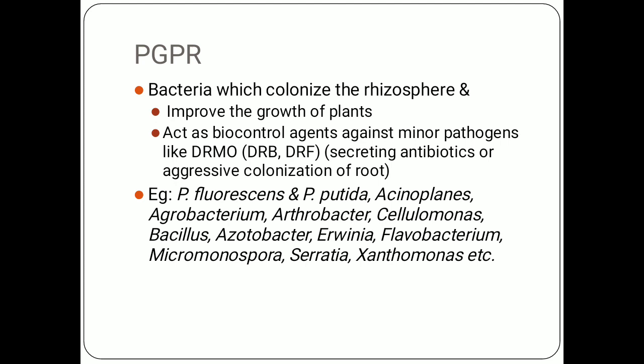Under Deleterious Rhizosphere Microorganisms, we have Deleterious Rhizobacteria (DRB) and Deleterious Rhizofungi (DRF). These DRMOs — harmful rhizosphere microorganisms — are minor pathogens which can be inhibited by PGPRs either by secretion of antibiotics or other chemicals, or by aggressive colonization of the root, which prevents these deleterious organisms from coming near the root.